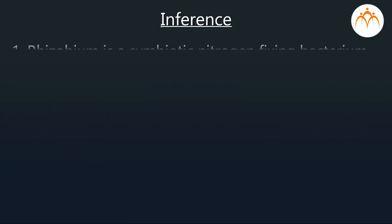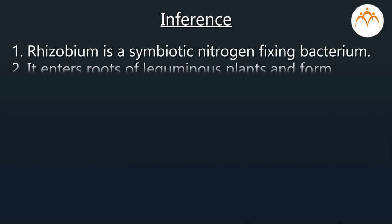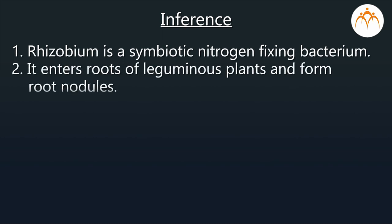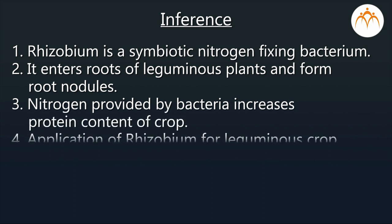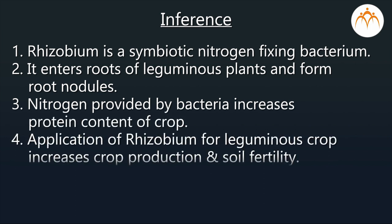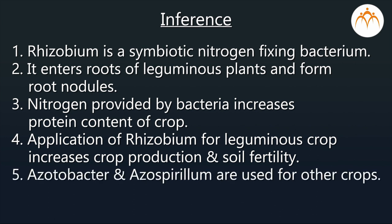Inference: Rhizobium is found in soil. These bacteria enter the roots of leguminous plants. Inside the roots, they multiply and form root nodules. Rhizobium can do nitrogen fixation only when it is inside the roots. This relationship of rhizobium and leguminous plants is called symbiosis, where both depend on each other. The nitrogen provided by the bacteria increases the protein content of the plants.